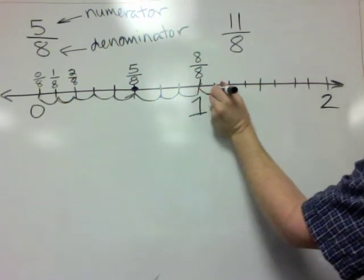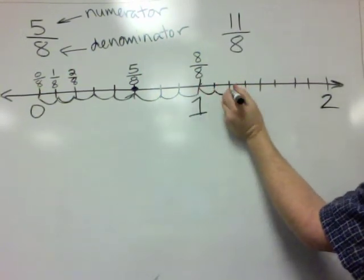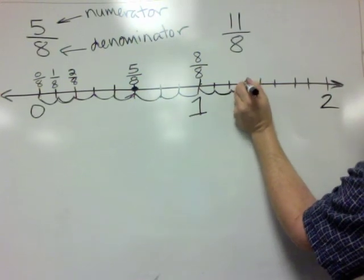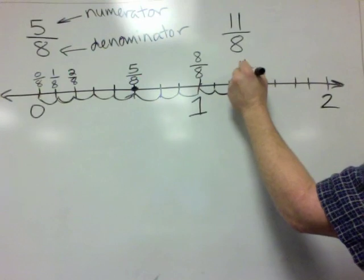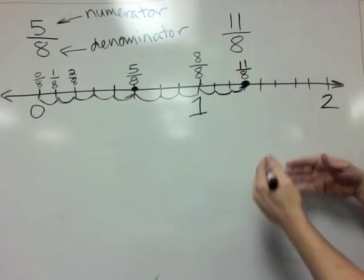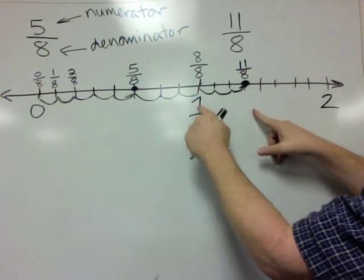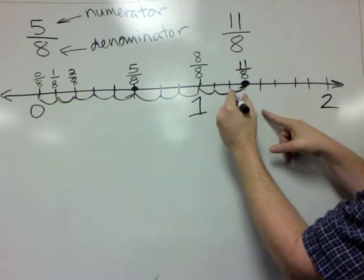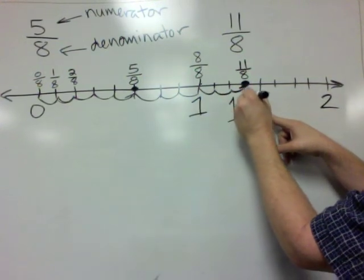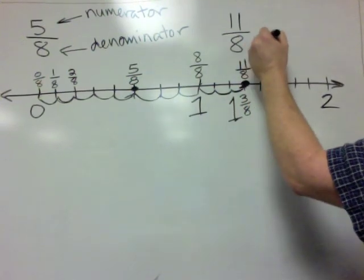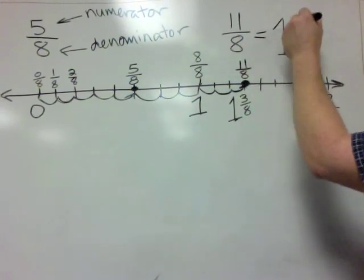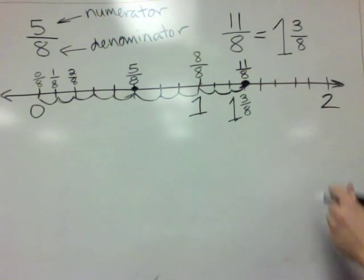So we got to go one more, that's 9. One more is 10. And finally, one more is 11. So right here is 11/8. And another way to call 11/8 is you could say that's one whole plus 3/8 more. So 11/8 can also be written as one whole and 3/8.